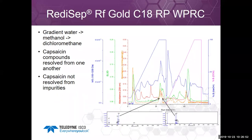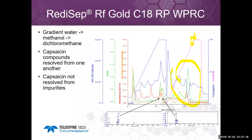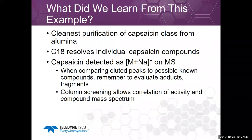Looking at the reverse phase wide polarity range on a gold C18 column, I ran a gradient from water to methanol, then methanol to dichloromethane. The dichloromethane washes off very nonpolar compounds and also helps clean the column. We still see many compounds coming off in this methanol-to-dichloromethane portion — this is an example of non-aqueous reverse phase. What we find is that the capsaicin compounds are well resolved from one another, but there are impurities that also co-eluted.